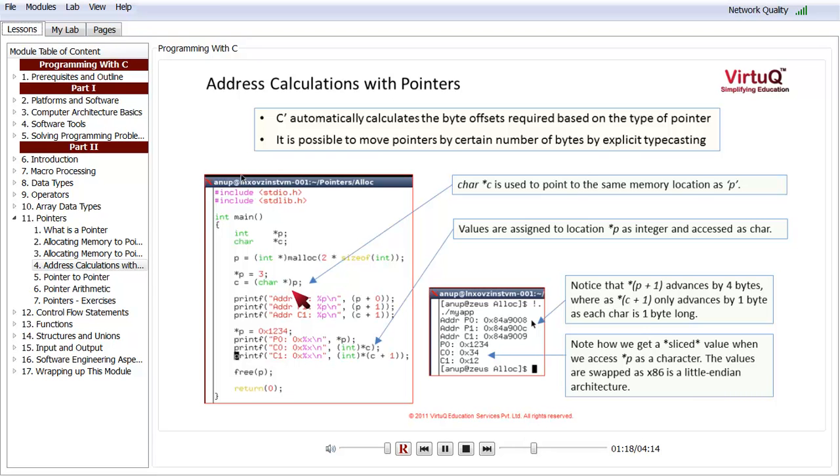Now, here are the series of printfs. First of all we print the address pointed to by P0, P1, and C1 just to show how the pointer arithmetic is working. Then what we do is we assign the 0th location a value of 0x1234, that is hexadecimal, and then we have a couple of printfs which are going to print star P, then star C typecasted to an int, and then star C plus 1 again typecasted to an int.